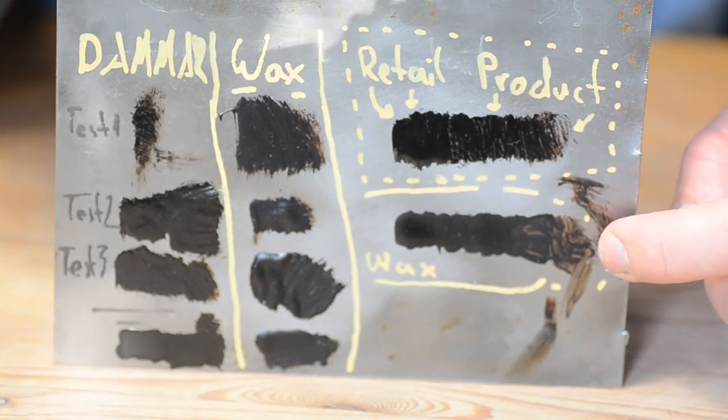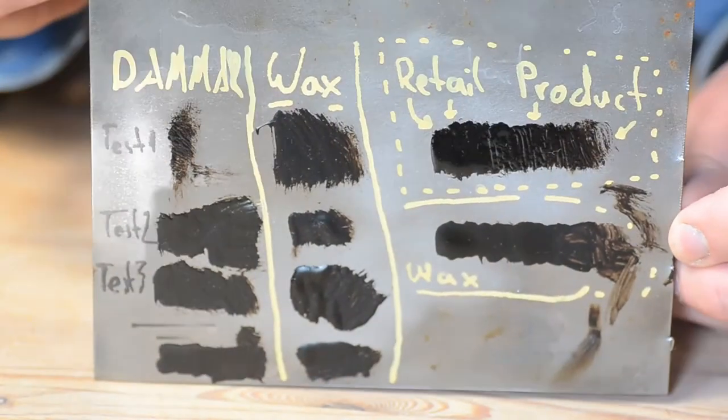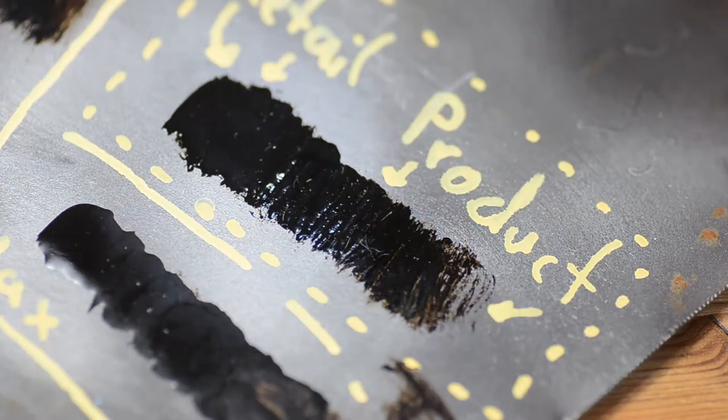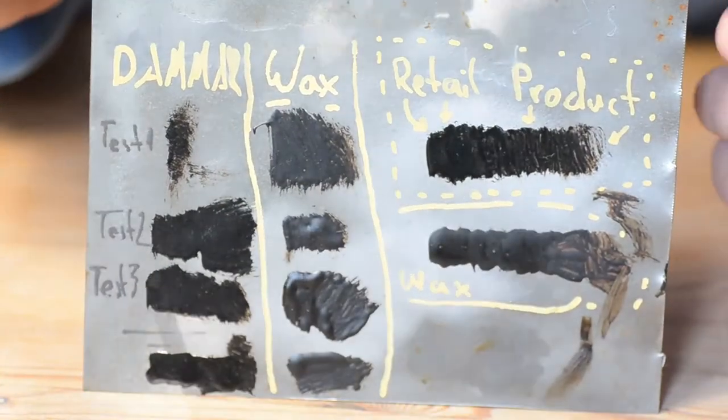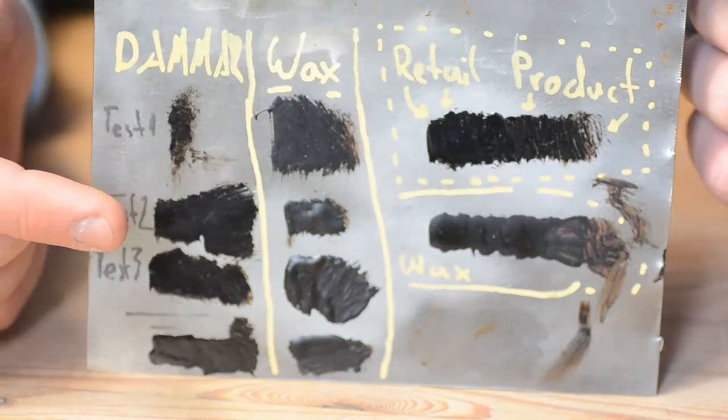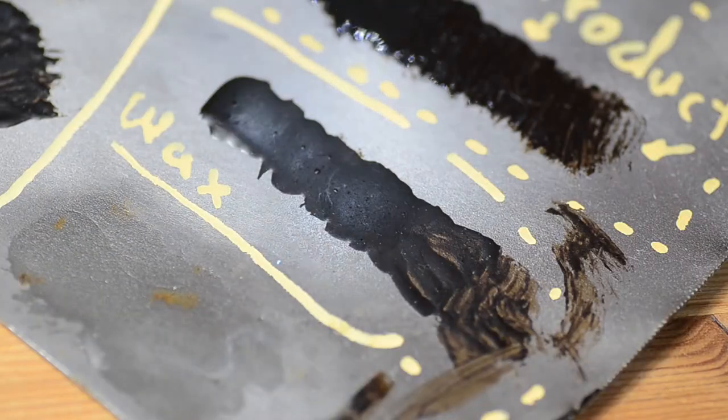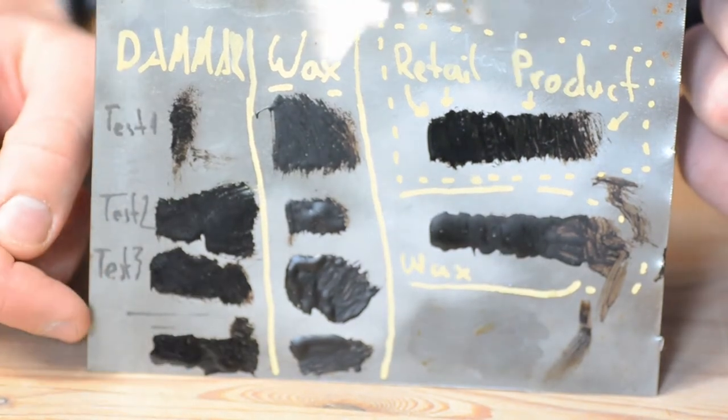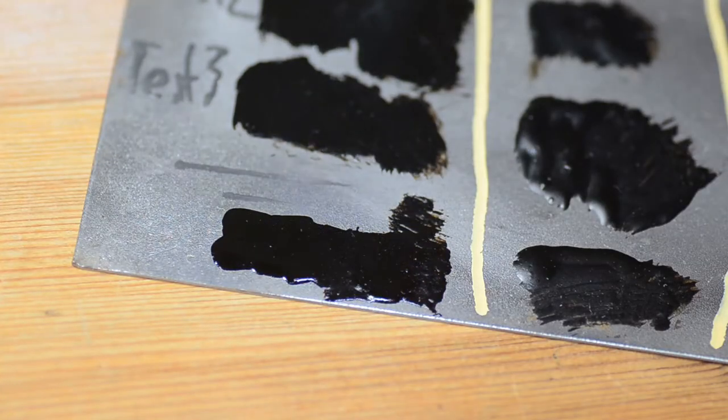And this is the retail product. It has a very nice shine. I hope you can see this, it has a very nice shine. I will make close-ups. The wax product is pretty matte. I guess it's because of the berry wax, the Japan wax. And the Damar version is pretty close to the retail version. It's very shiny, very glossy.